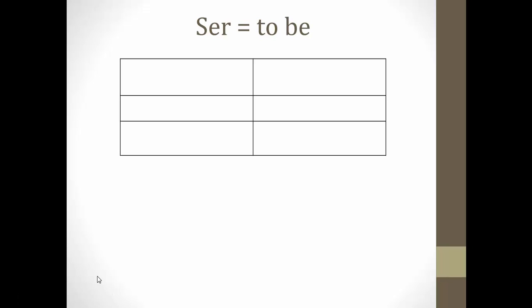On the right-hand side of your note guide, I want you to fill out all forms of ser. In Spanish, if I want to say I am, I say yo soy. If I want to say you are, I say tú eres. If I want to say he or she is, I say usted, él, ella es. If I want to say we are, I would say nosotros somos, and they are is ellos son.